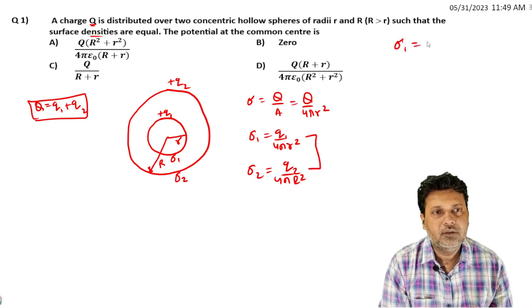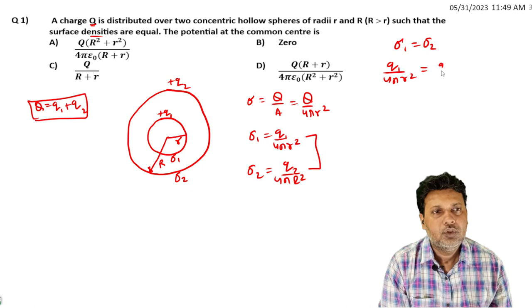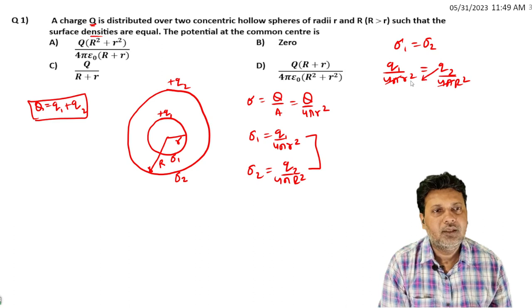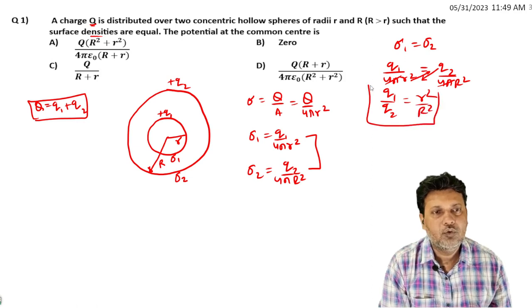Setting σ1 = σ2 gives us q1 / (4πr²) = q2 / (4πR²), which simplifies to q1/q2 = r² / R².